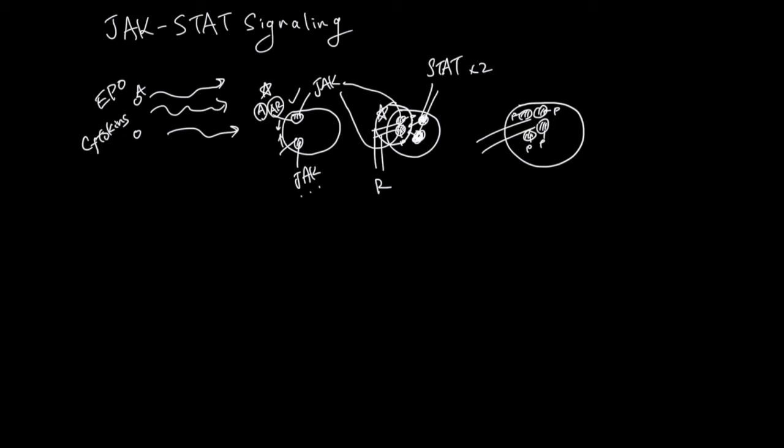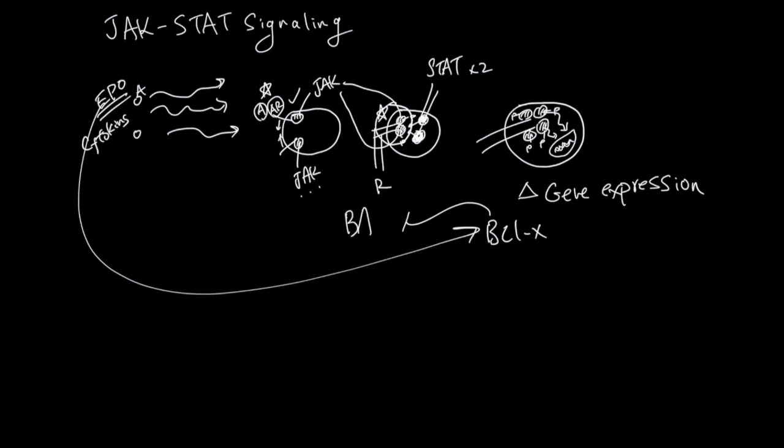And this STAT can now go to the nucleus and change the gene expression of this cell. And if the ligand is EPO, then the gene expression is going to involve activation of an anti-apoptotic BCLX protein, which is going to work against the Bax protein that's driving the apoptosis of a red blood cell precursor.